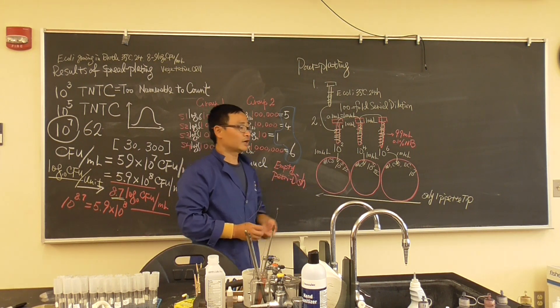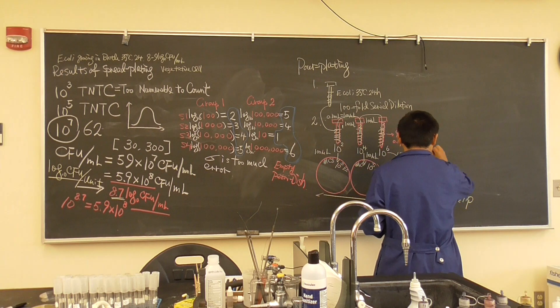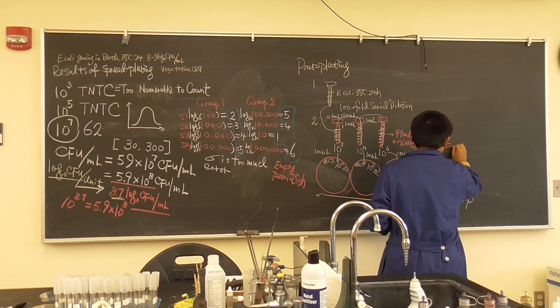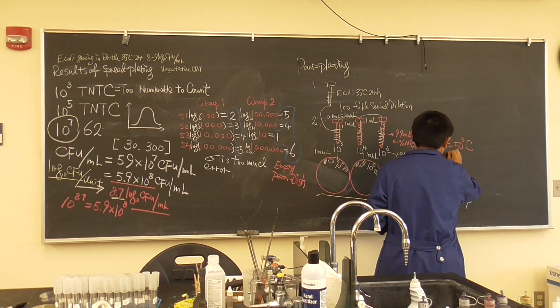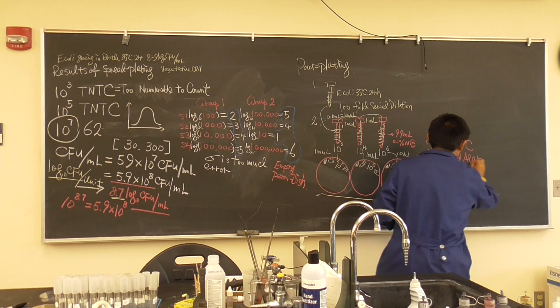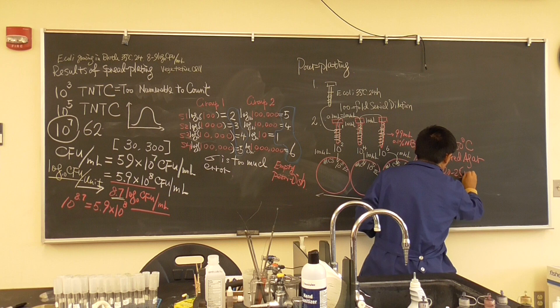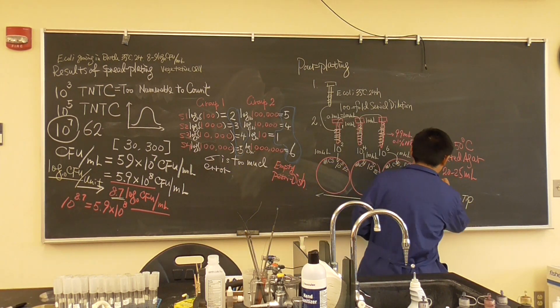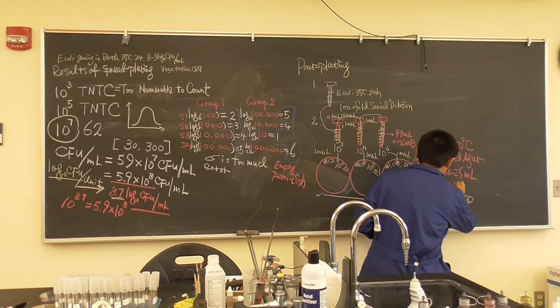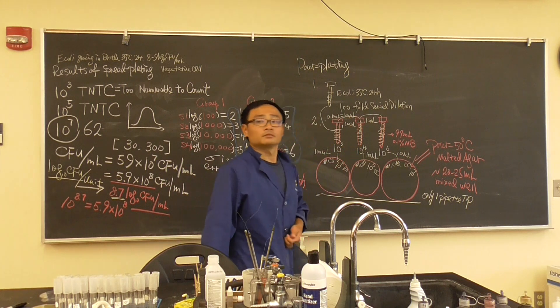After you're adding, what we do? From 50 degrees Celsius, melted agar. Around 20 to 25 ml approximately. Then you have to mix well.